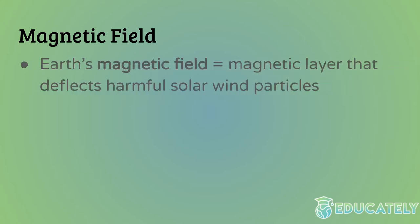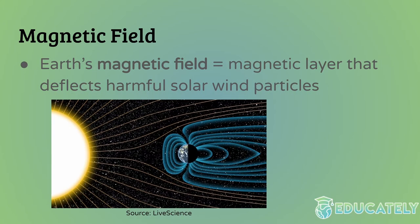To understand the magnetic poles, you first have to understand the magnetic field. Earth's magnetic field is like a magnetic layer that deflects harmful solar wind particles and other things from the Sun and from space. It's formed by convection currents inside the Earth's core.